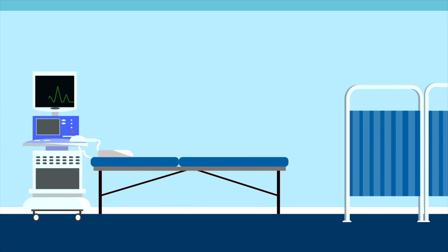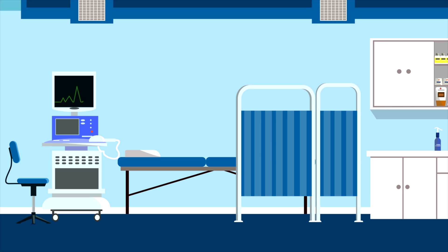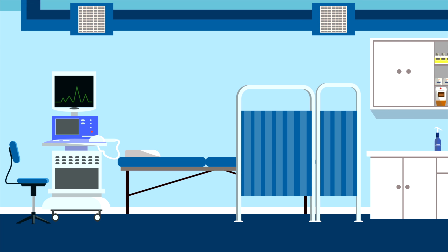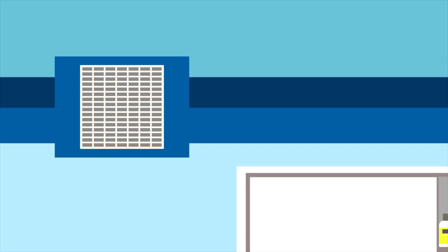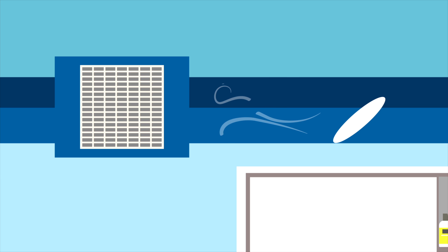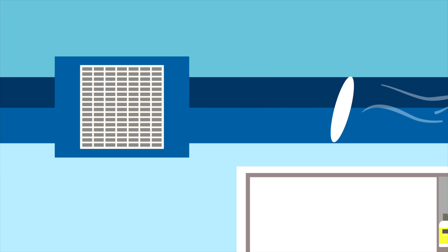Ventilation standards set requirements for the minimum number of air changes per hour based on room type. This is a key component of how building engineers design the entire heating and air conditioning system. During design, fans are sized appropriately to meet these requirements. Since different rooms have different requirements, the entire system has to be balanced using dampers for each room, which restricts the amount of air. This restriction is necessary to keep the building balanced. If the facility's team increased the fan speed in one area, it could have negative impacts in a different area and throw the system out of balance.